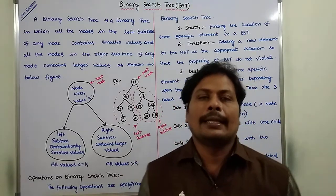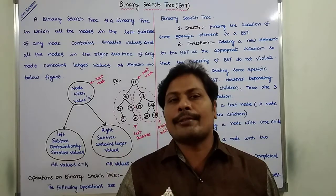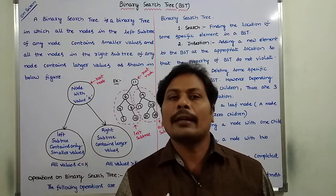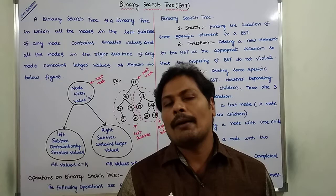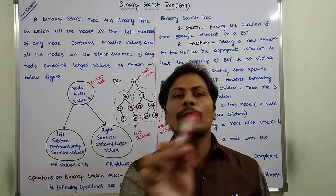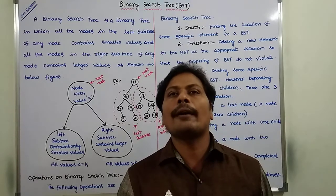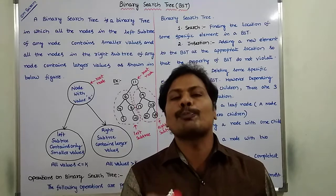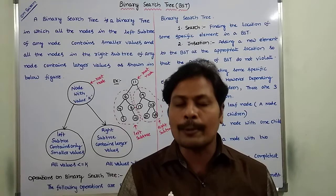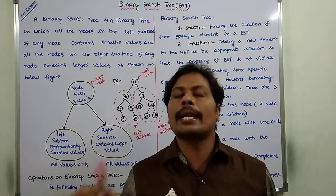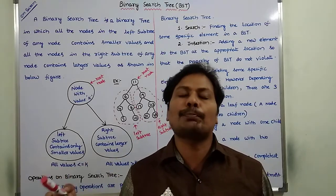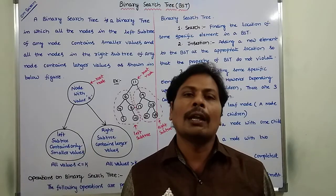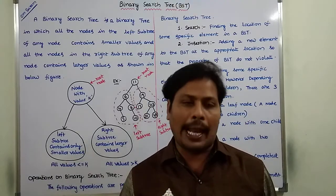A binary search tree is a binary tree in which all the nodes in the left subtree of a node can contain smaller values, and all the nodes in the right subtree of a node can contain larger values.